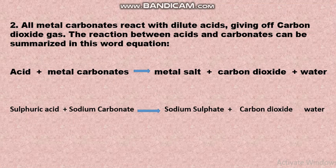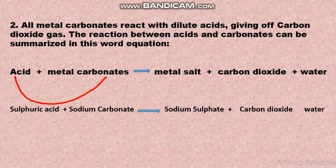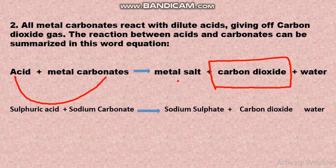The second chemical property of acids: all metal carbonates react with dilute acid to give off carbon dioxide gas. The relation between acid and carbonates can be summarized as: when acid reacts with metal carbonates, carbon dioxide gas is given off along with metal salt and water.